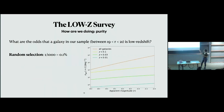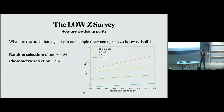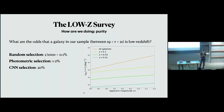I split this discussion into purity and completeness. Starting with purity: what are the odds that a galaxy in our sample is low redshift? From random selection that's about 0.1%. Pulling in photometric selections brings us to about 1 to 2%. Folding in CNN selection gets us to 20%. This increase is really impressive — one in five of the CNN-selected objects we're getting redshifts for are actually low redshift objects.